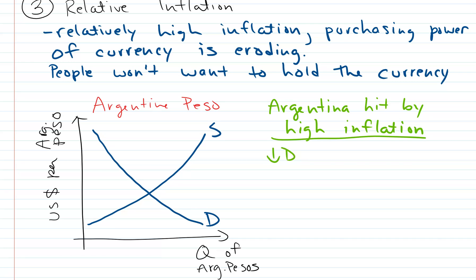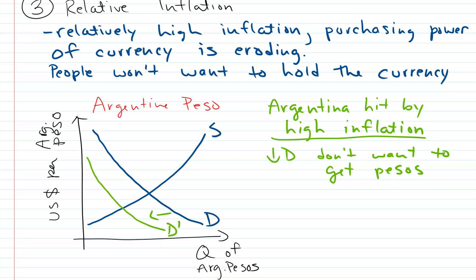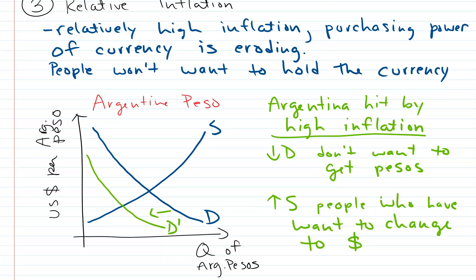Think about what happens to both sides. On the demand side, no one wants to buy Argentine pesos — the currency is losing value, so why jump into it? Demand goes down. And on the supply side, the people who already have pesos want to get rid of them and exchange them for dollars, so supply goes up.